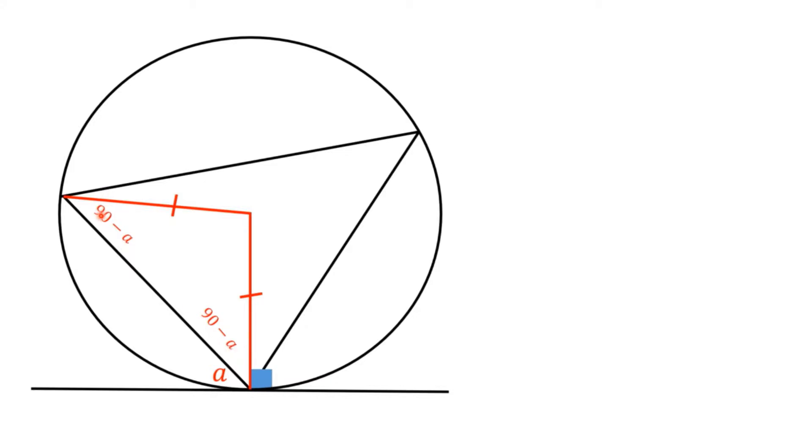If this is 90 minus A, and this is 90 minus A, and the whole thing is 180 degrees, then this angle at the top here has to be 2 times A.